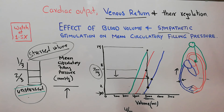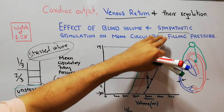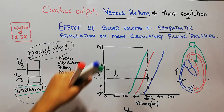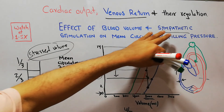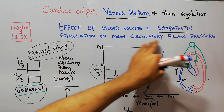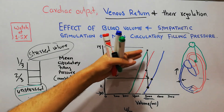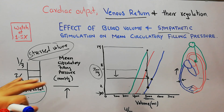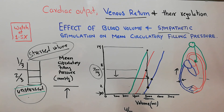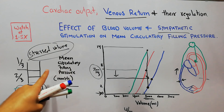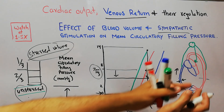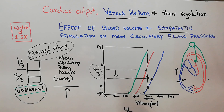In conclusion, increasing blood volume increases mean circulatory filling pressure. Activation of sympathetic stimulation also increases mean circulatory filling pressure, and both factors lead to an increase in venous return by increasing the stressed volume. With inhibition of sympathetic stimulation there is a decrease in mean circulatory filling pressure because there is more room for unstressed volume — essentially a reservoir or pooling of blood develops. That's all about the effect of blood volume and sympathetic stimulation on mean circulatory filling pressure.